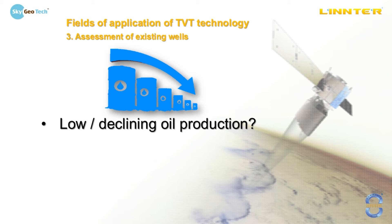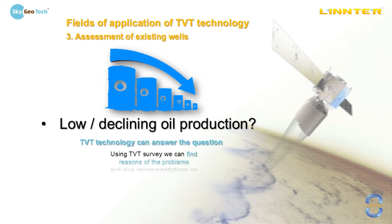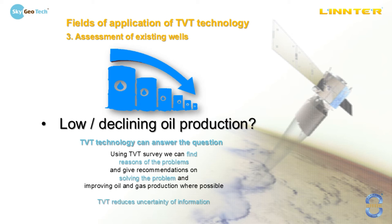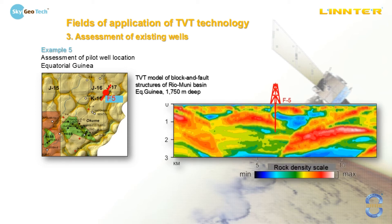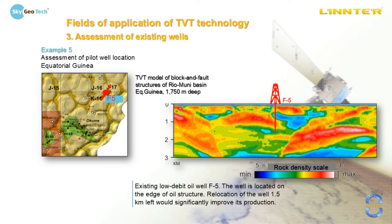One more common problem in the oil and gas industry is low or declining oil production. TVT technology can be used to find the reasons and solve this problem where possible. Example: assessment of a pilot well location, Equatorial Guinea. This is a TVT horizontal section of block-and-fault structure. The A5 well has very low oil production. We built TVT images including a vertical profile of block-and-fault structure under the well. We can clearly see the oil trap, but this well was drilled on the edge of the structure. Our recommendation is relocation of this well 1.5 km to the left, which would significantly improve production.